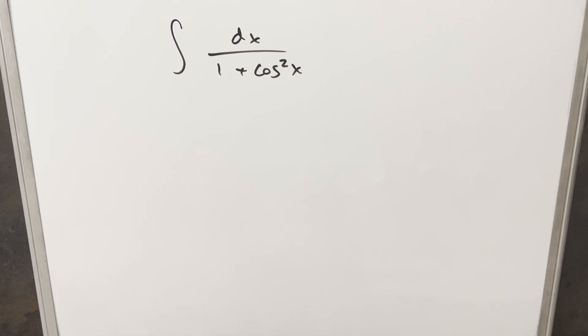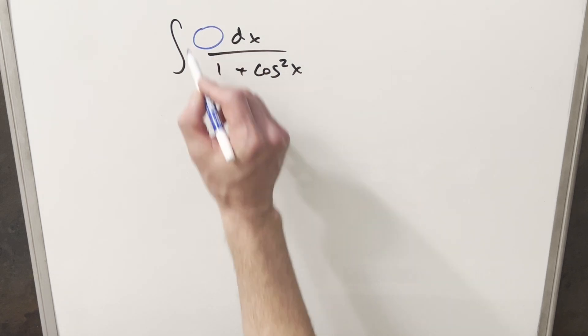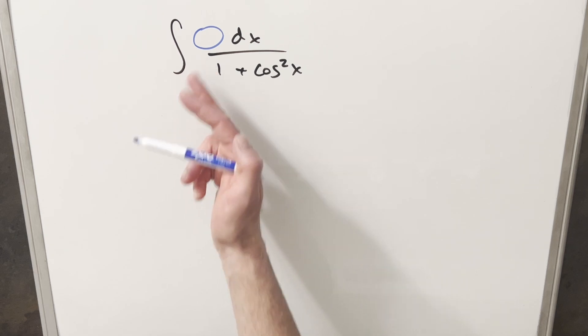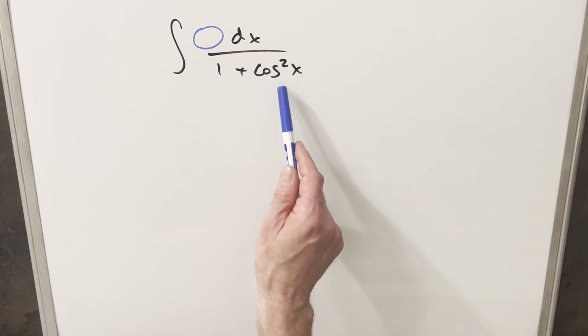The thing that got my attention with this one is there's not really an obvious u-substitution. We've got nothing in the numerator, so if I were to make a u-substitution for cosine, we don't have a sine there. I thought maybe we could multiply the denominator by the conjugate, but that's not great because then we end up with cosine to the fourth. It might work, but I didn't try that.